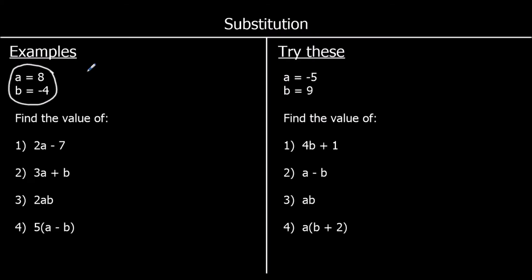The first one: 2a minus 7. So 2 times 8, minus 7. 2 times 8 is 16, so it's 16 minus 7, and that is 9.